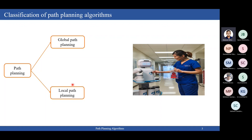Local path planning deals with obstacles that are moving — there might be humans and other moving obstacles whose positions are changing with time. We cannot have a predefined path because the obstacles are changing their location. So as soon as the robot senses a particular moving obstacle through its sensors, like a LiDAR sensor (light detection and ranging), camera, depth cameras, or ultrasound sensors, it keeps the global path in mind but creates a local path to avoid that obstacle.